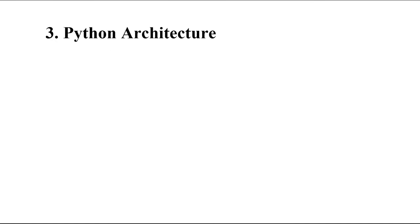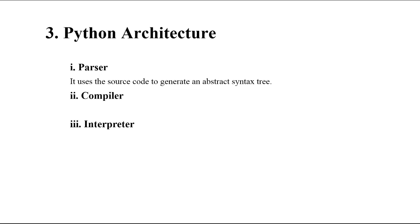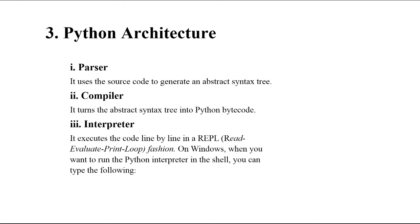Let's discuss Python architecture and its user flow. It includes a parser, compiler, and interpreter. The parser uses source code to generate an abstract syntax tree. The compiler turns the abstract syntax tree into Python bytecode. The interpreter executes the code line by line in a read-evaluate-print loop fashion. On Windows, you can run the Python interpreter in the shell.